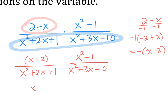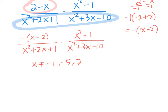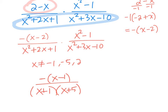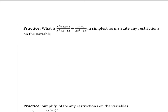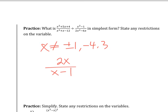The restriction for that division problem is x ≠ −1, −5, and 2. The final simplified expression is −(x − 1) over (x + 1)(x + 5). For the next practice problem, x ≠ ±1, −4, and 3, and the simplest form is 2x over (x − 1).